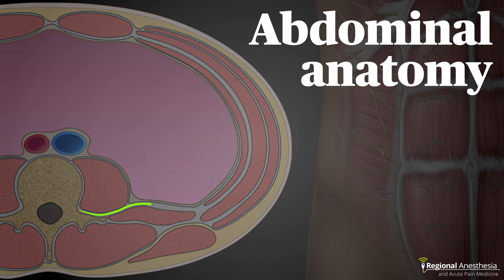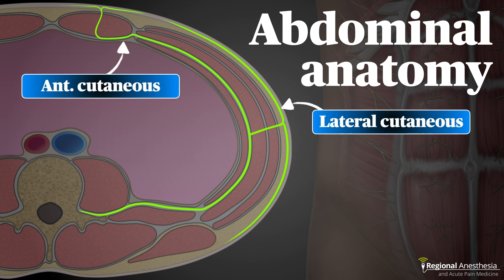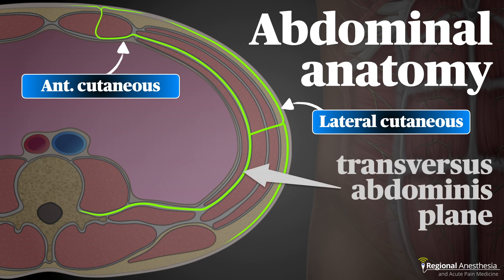The spinal intercostal nerves exit the vertebral foramina and wind their way around the trunk between the transversus abdominis and the internal oblique. They penetrate the rectus sheath before emerging anteriorly to innervate the anterior midline. At the midaxillary line, they also give off a lateral cutaneous branch, which divides to innervate the anterior lateral and posterior lateral aspects of the trunk. The anterior cutaneous and lateral cutaneous branches together innervate the majority of the truncal surface, minus the area at the posterior midline. The intermuscular fascial plane the nerves travel in is called the transversus abdominis plane. We're going to block the nerves here, upstream of the lateral branch takeoff, so we get the maximum effect.